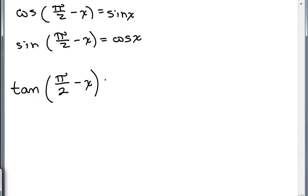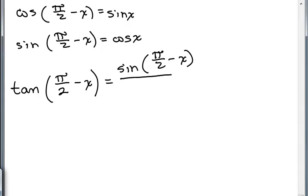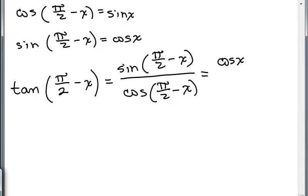How about the tangent? We know the tangent of an angle is the sine of that angle divided by the cosine. So that's the sine of pi over 2 minus X all over the cosine of pi over 2 minus X. But the sine of pi over 2 minus X is the same thing as the cosine of X, and the cosine of pi over 2 minus X is simply the sine of X. And cosine over sine is the cotangent of X. That's our third identity: the tangent of pi over 2 minus X equals the cotangent of X.